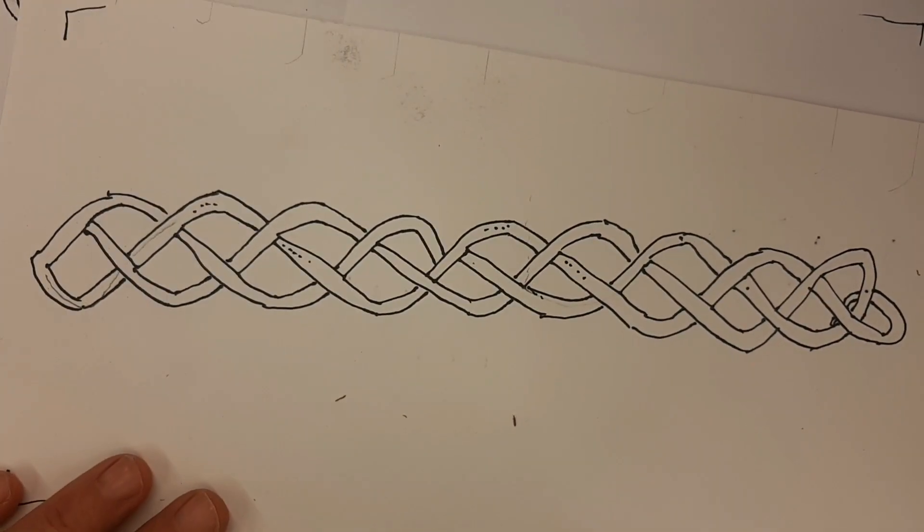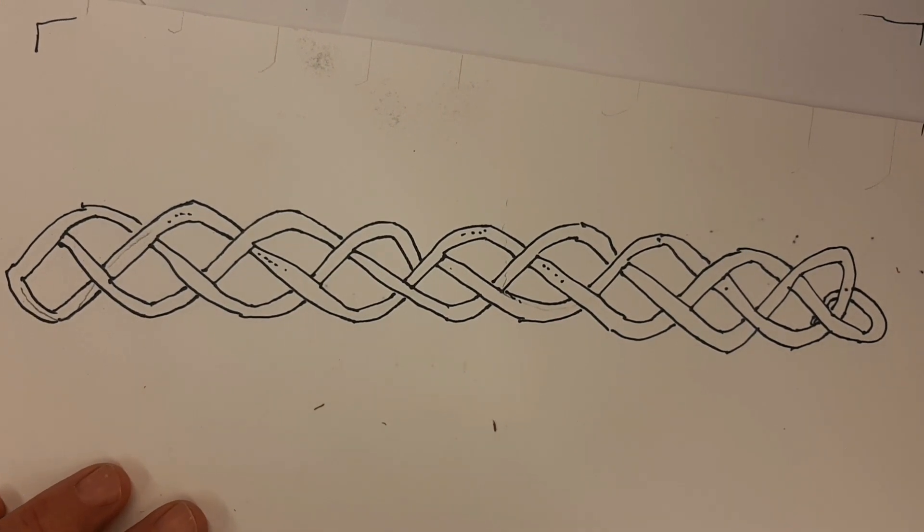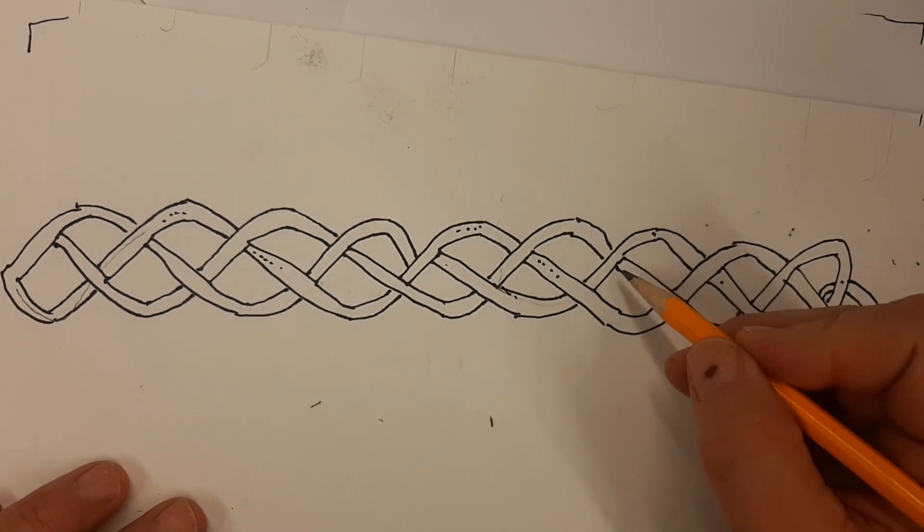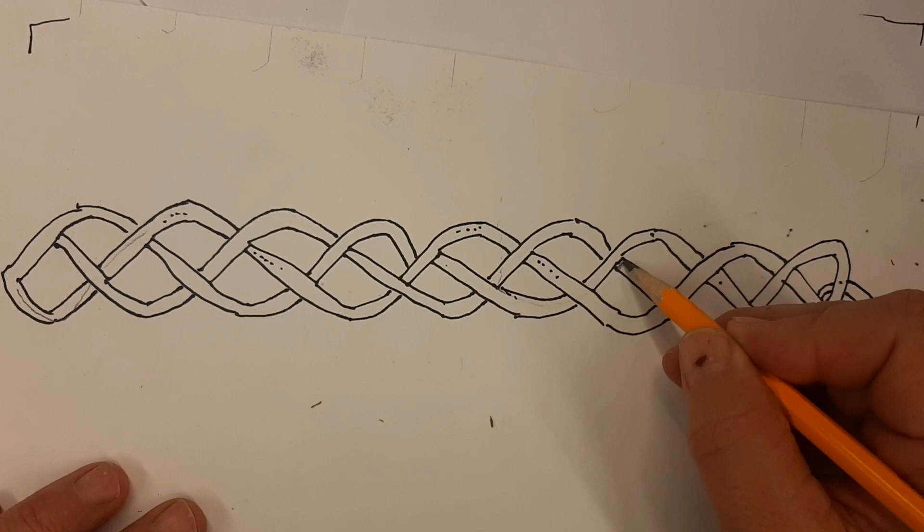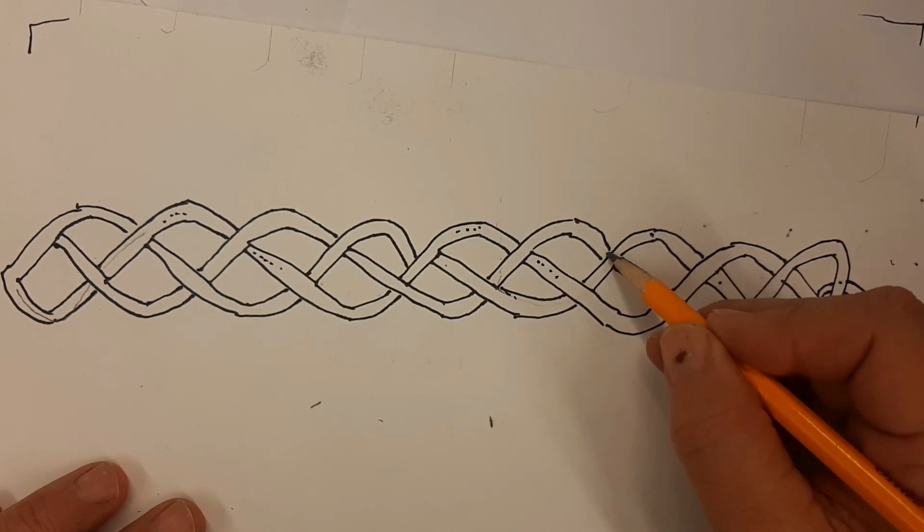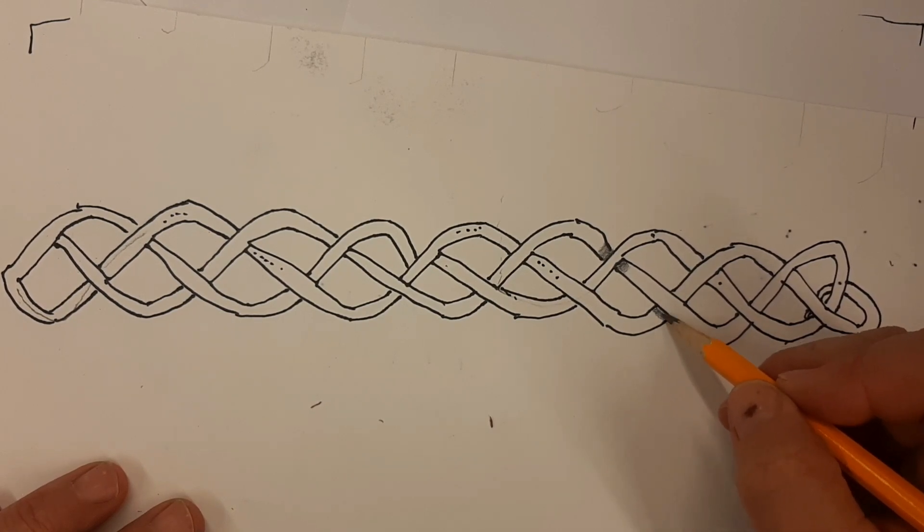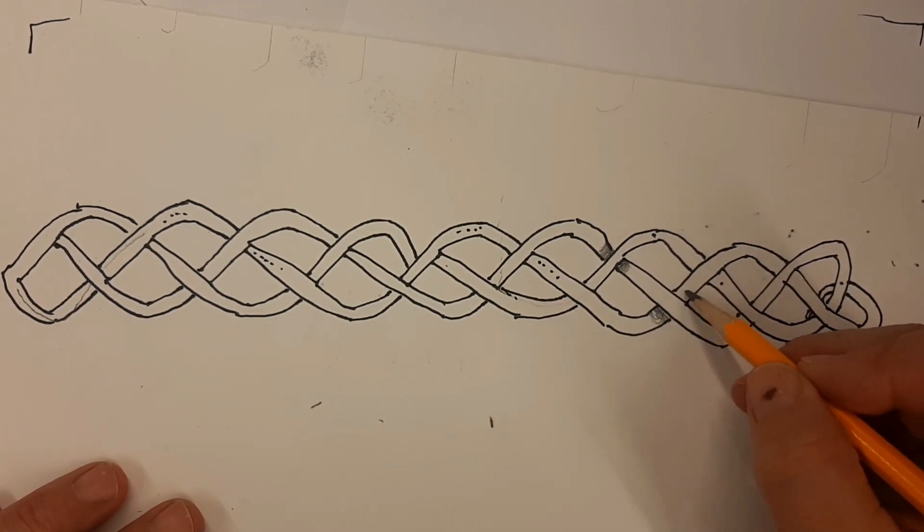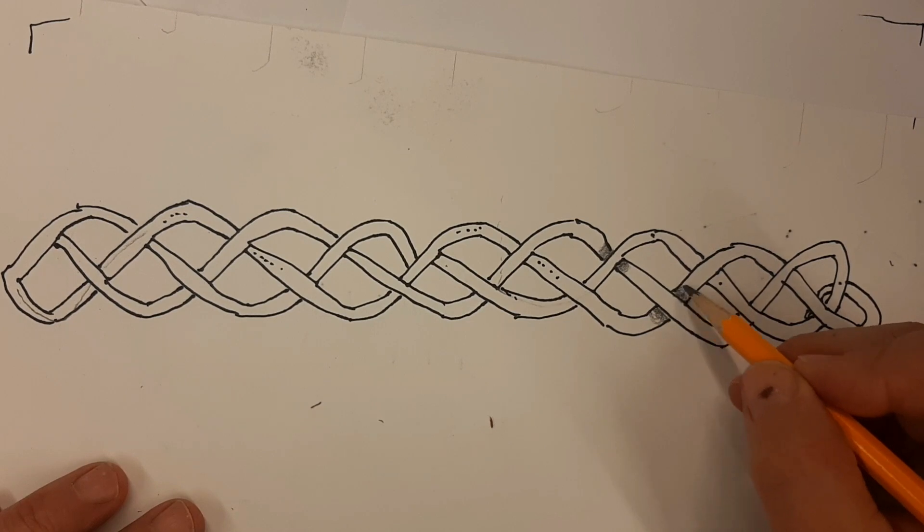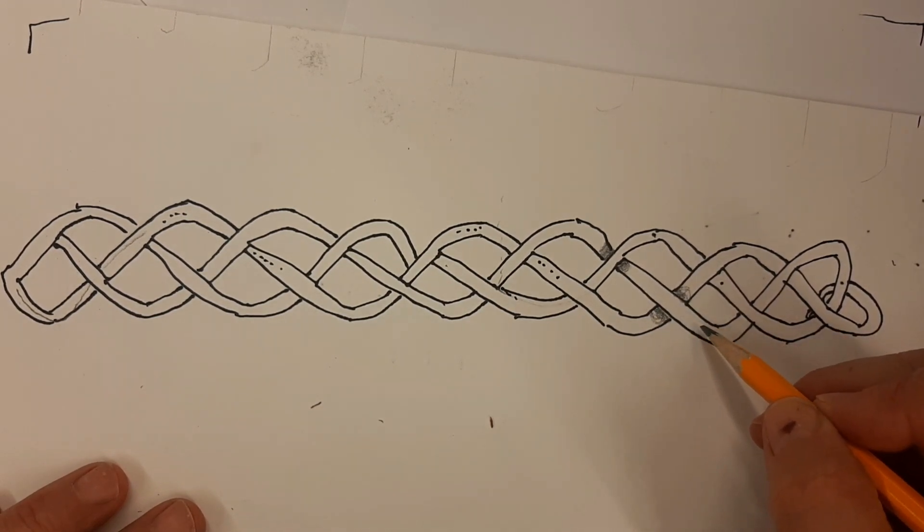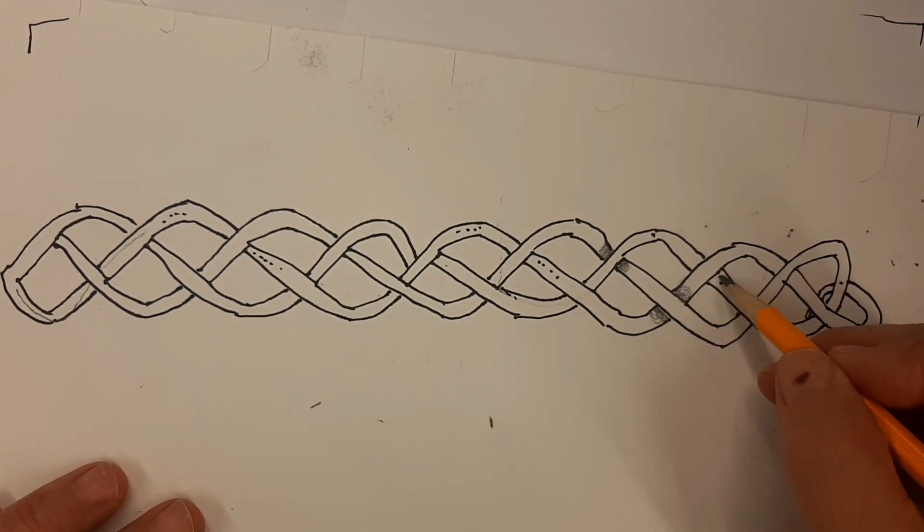So now the shading. Wherever something goes under something, just like a lot of the other textures, there should be some shadow where it goes under. So here's another one. Where it goes under, there should be some shadow on the one that goes under. This is going over, so there's no shadow there. It's where it goes under. Where it goes under, there should be shadows.